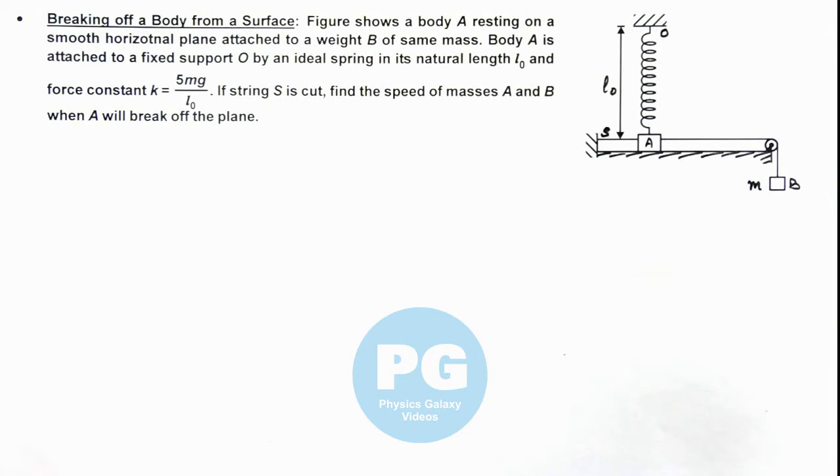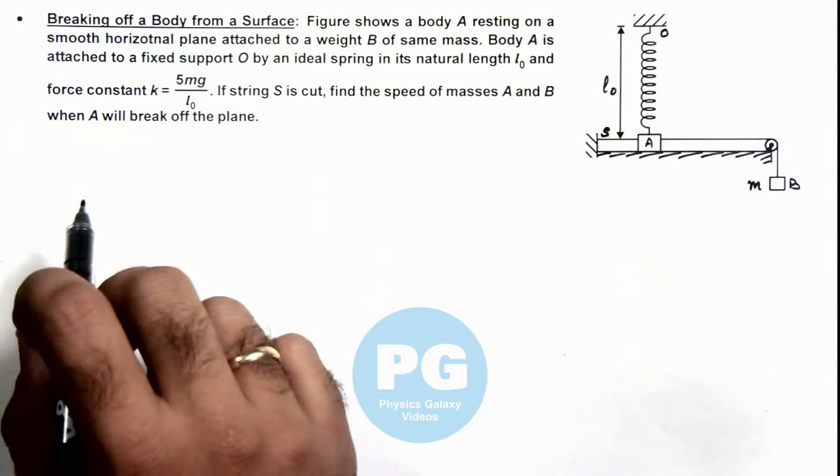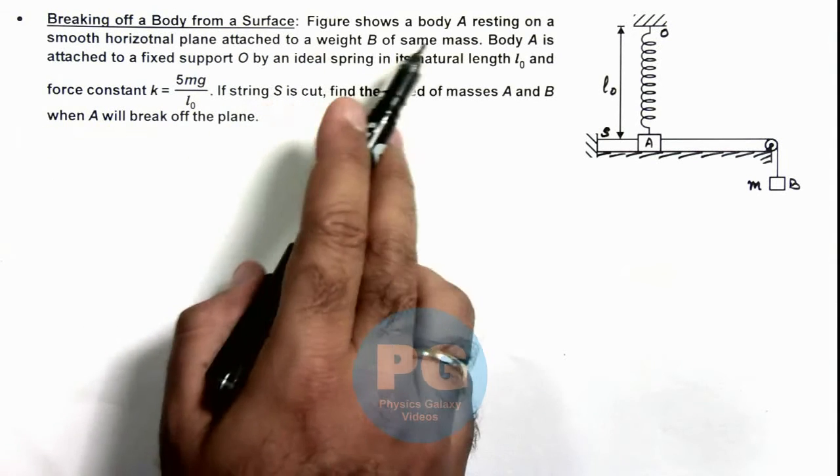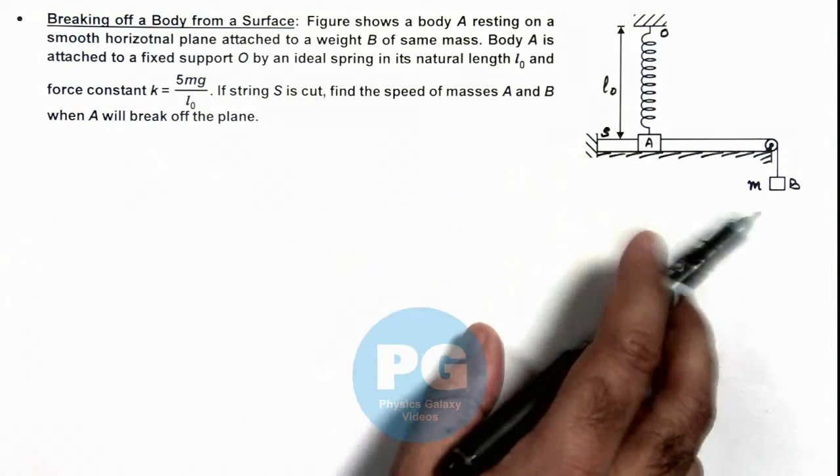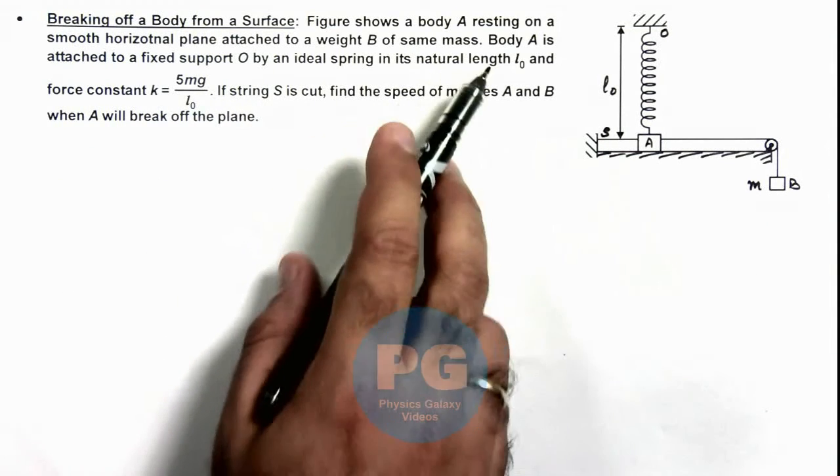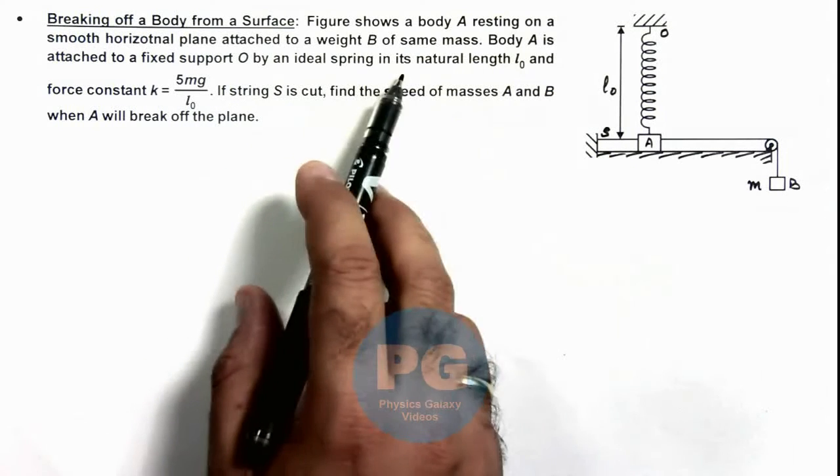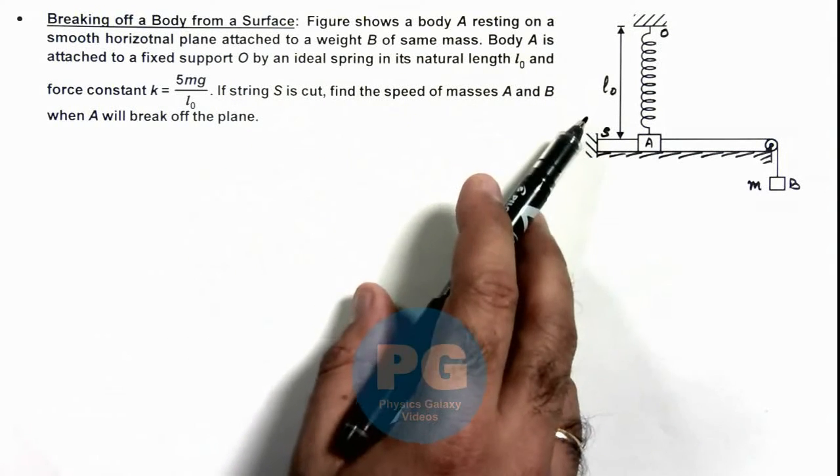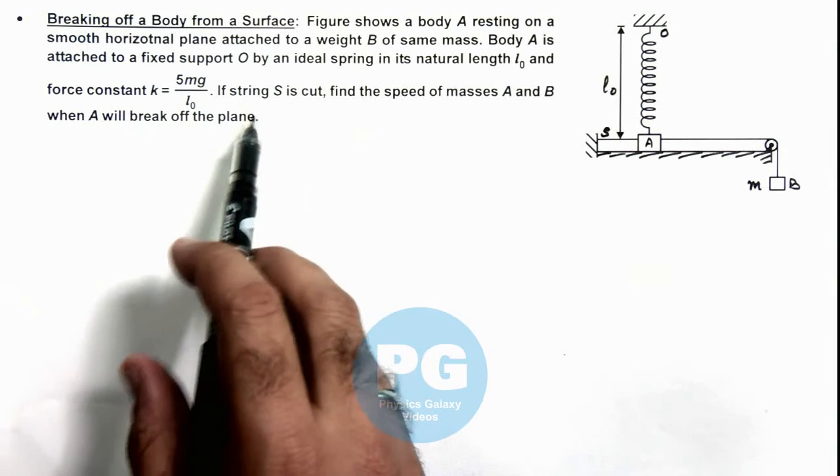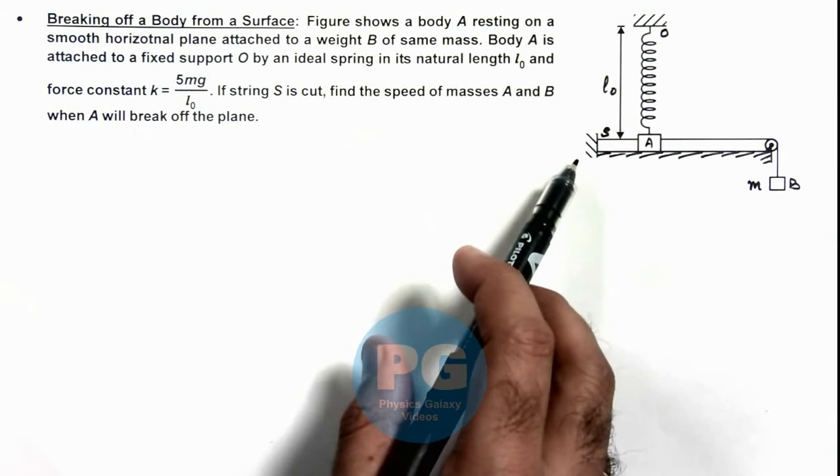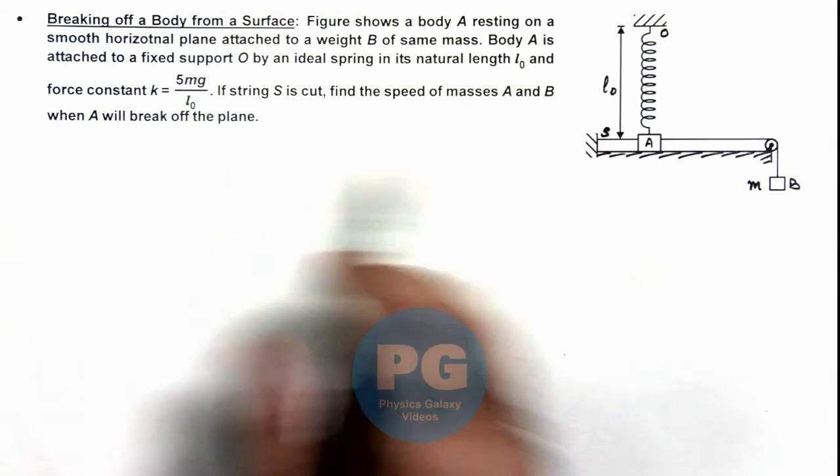In this illustration, we'll discuss a situation where a body breaks off from a surface. The figure shows a body A resting on a smooth horizontal plane attached to a weight B of the same mass. Body A is attached to a fixed support O by an ideal spring with natural length l₀ and force constant 5mg/l₀. If string S is cut, we are required to find the speed of masses A and B when A will break off the plane.